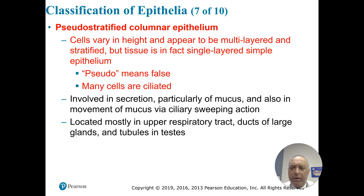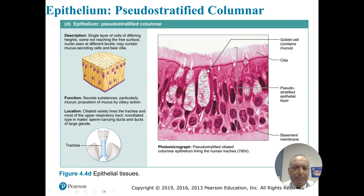Another type is pseudostratified columnar epithelium. These are columnar epithelium but not simple — cells vary in height and appear to be multilayered, but in fact they are single-layered cells. The nuclei are scattered rather than lined up, as in simple columnar. Pseudo means false, and many cells are ciliated. Here we see the cilia at the apical surface, and you can see how the columnar cells don't quite line up as neatly as simple columnar — hence they're called pseudostratified.